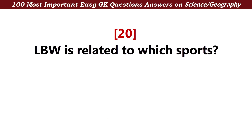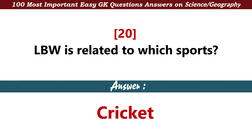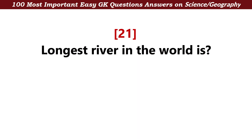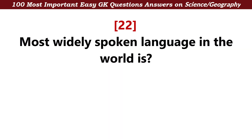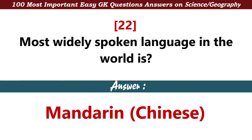LBW is related to which sport? Answer: Cricket. Longest river in the world is — Answer: Nile. Most widely spoken language in the world is — Answer: Mandarin Chinese.